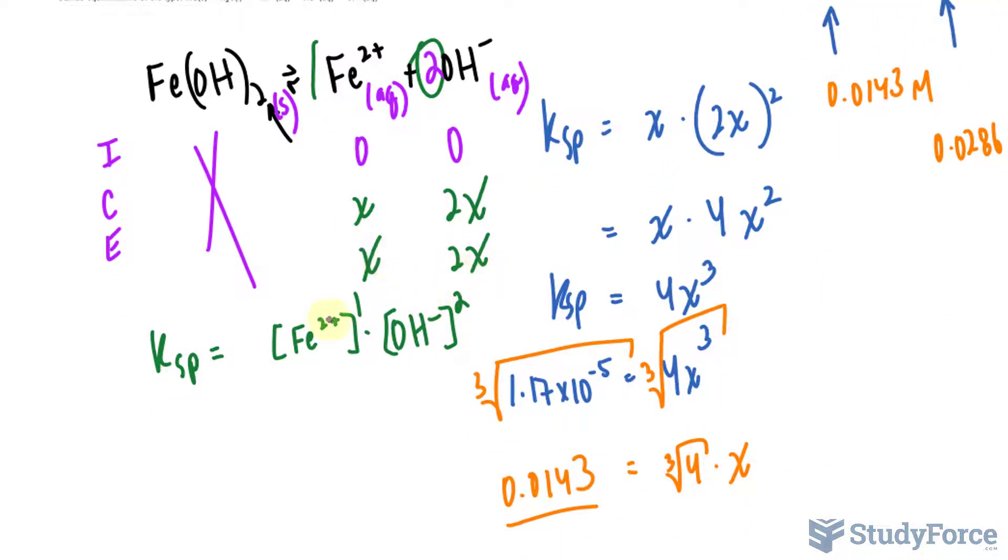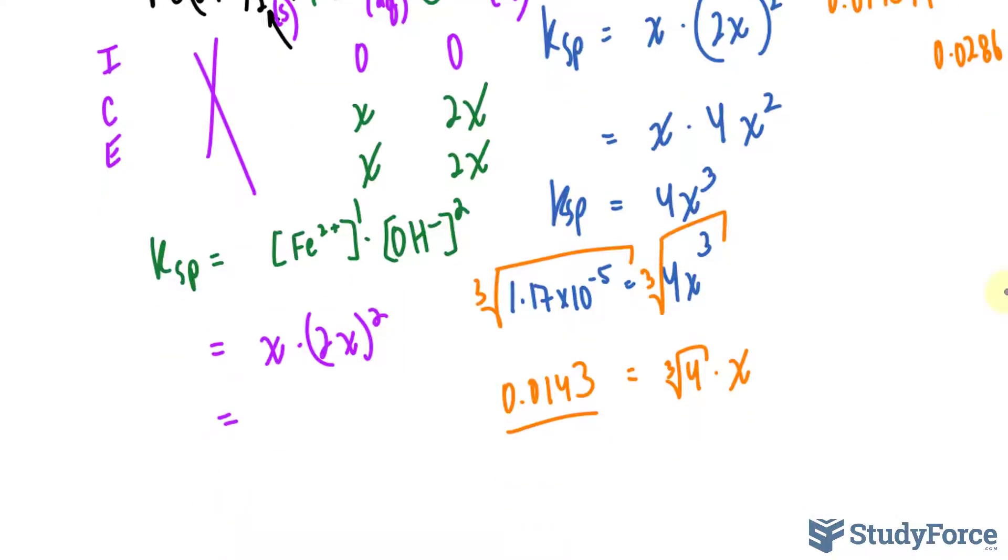I'll replace this X and this 2X where they belong. So I have X times 2X raised to the power of 2, much the same way we did in question 1. And we end up with 4X cubed.